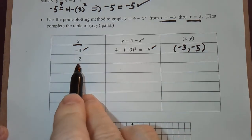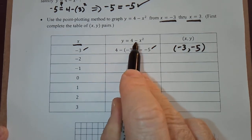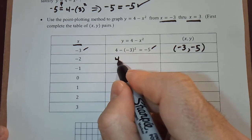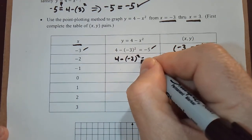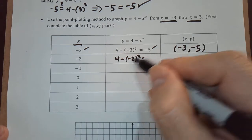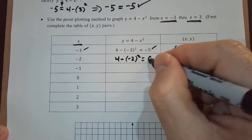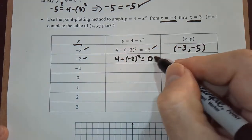Now let's do the same thing with negative 2. x is negative 2, so y is going to be 4 minus negative 2 squared. 4 minus negative 2 squared is 4, 4 minus 4 is 0, so negative 2 comma 0.